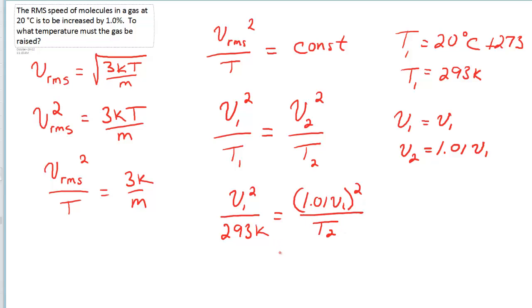Now when we remove our brackets, we get the following. 1.01 squared is 1.0201, so we've got that number. The V is also squared, so we get V1 squared on the right. All divided by T2, which is what we're looking for, equals on the left, V1 squared over 293.